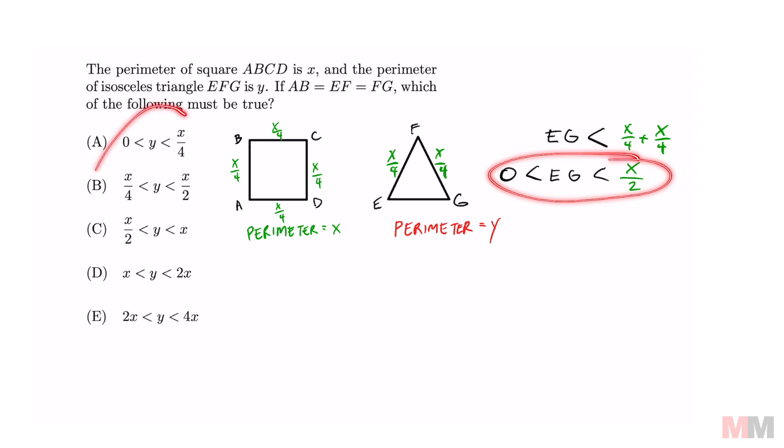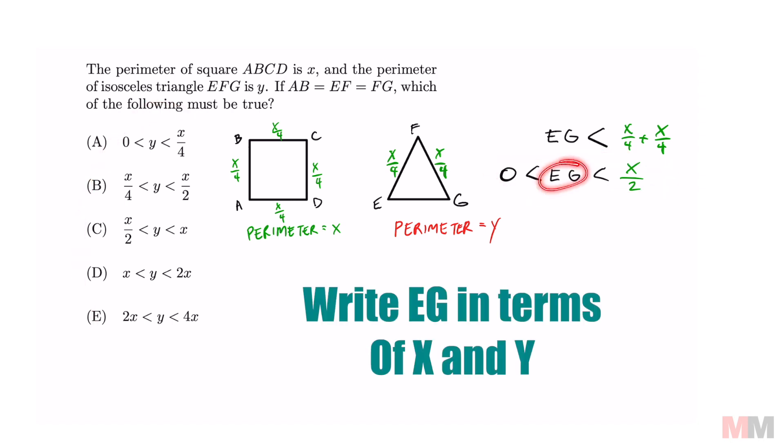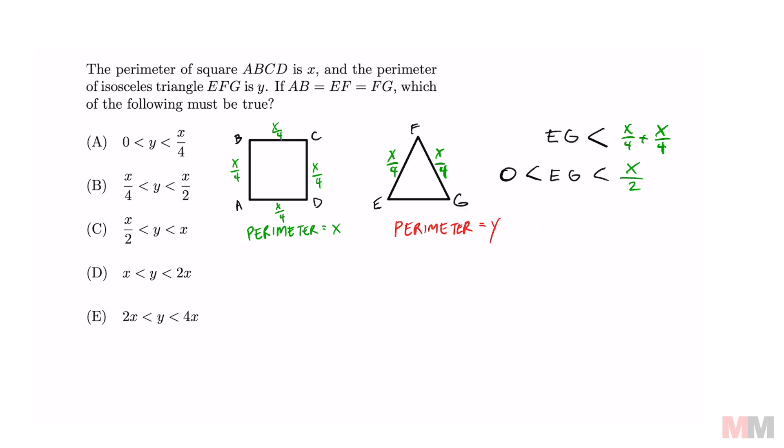So this almost looks like that, but now we got to write EG in terms of X and Y. So how do we do that? Well, this says the perimeter equals Y and the perimeter is made out of EG and these two lengths. We can write this equation EG plus X over 4 and another X over 4 equals Y. That then simplifies to EG plus X over 2 equals Y.